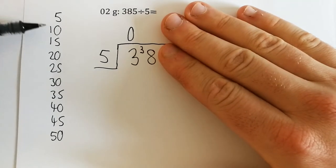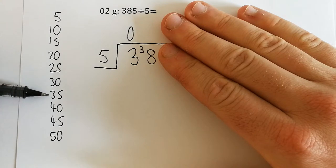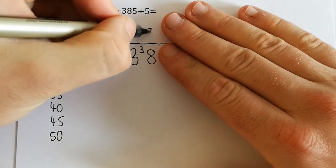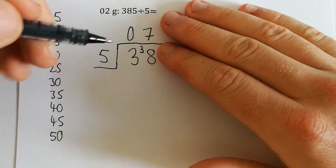38 divided by 5 is 1, 2, 3, 4, 5, 6, 7. So always write our number at the top first, and then we can work out how many we've got left.